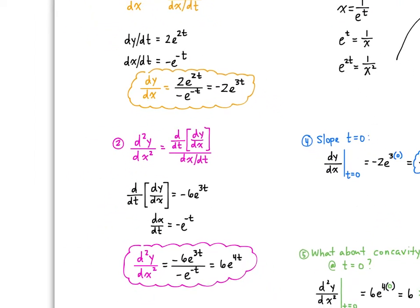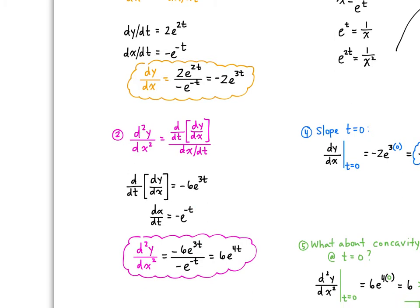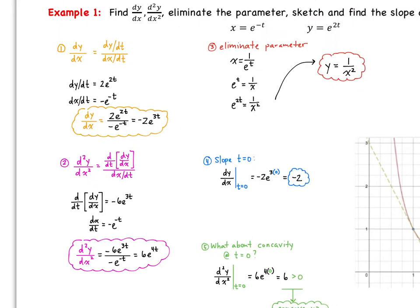Now for the second derivative, we take the derivative of dy/dx — which is −2e^(3t) — giving us −6e^(3t), and divide by dx/dt, which is still −e^(−t). Putting this ratio together, −6e^(3t) over −e^(−t) simplifies to 6e^(4t). So that's the second derivative.